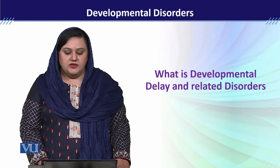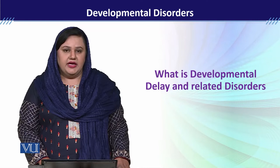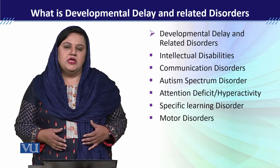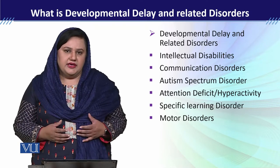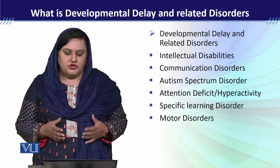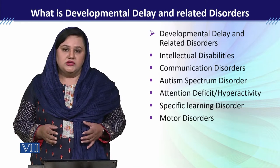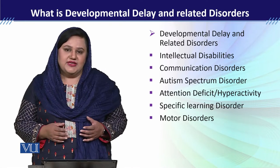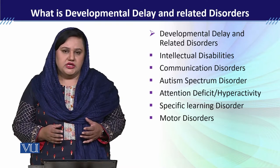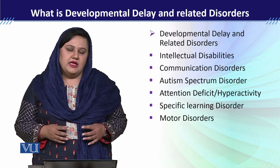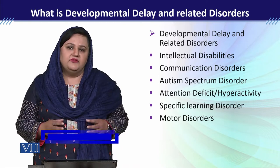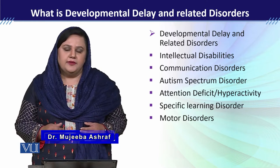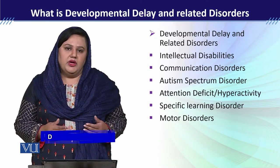Module 3 is about what is developmental delay and related disorders. If we look into the DSM-5, it gives us different types of disorders under this heading, and these are comprised of intellectual disability, communication disorder, autism spectrum disorder, attention deficit or hyperactivity disorder, specific learning disorder, and motor disorders. DSM-5 is saying that children who have developmental delays might be classified in any one of these disorders. We will go one by one about these disorders.